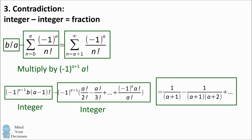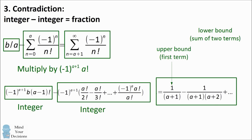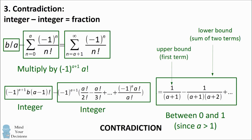This series has an upper bound. It converges to something smaller than the first term because we're subtracting things after it. So the upper bound is 1 over A plus 1, and we can find a lower bound as the sum of the first two terms. This has to be between 0 and 1, because A has to be greater than 1. And this is the contradiction — we have an integer minus an integer equaling something between 0 and 1. This is not possible. So E cannot be represented as a rational number. Therefore, E must be irrational.